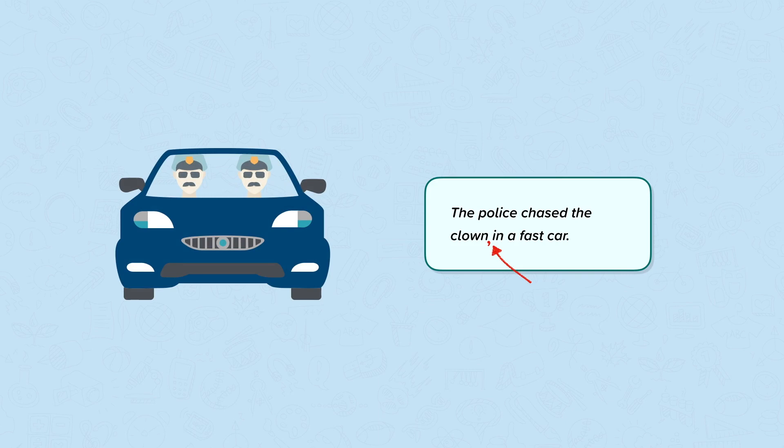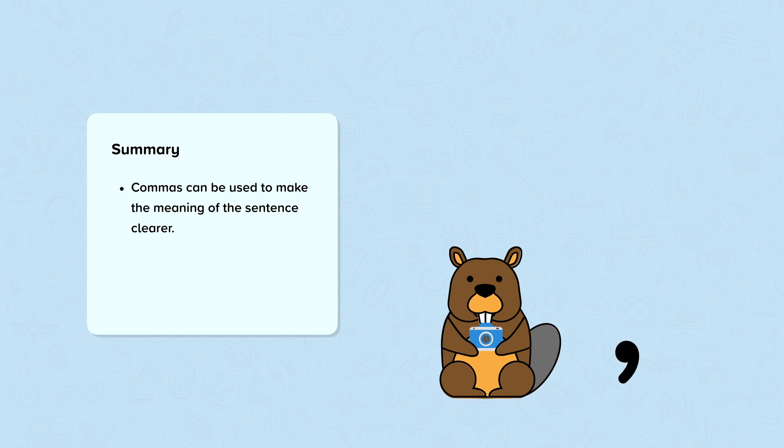In summary, commas can be used to make the meaning of the sentence clearer. Read the sentence aloud and think about if you need a pause in the sentence.